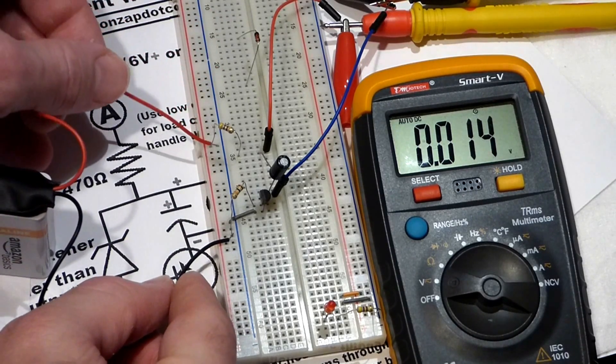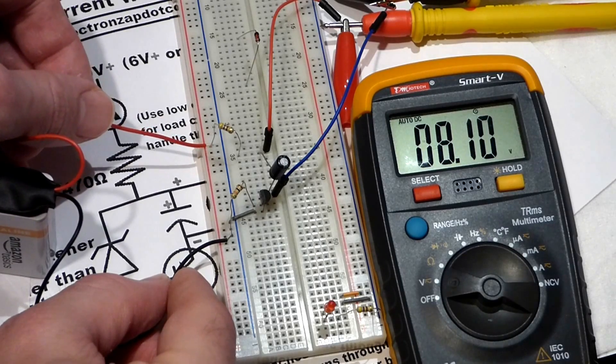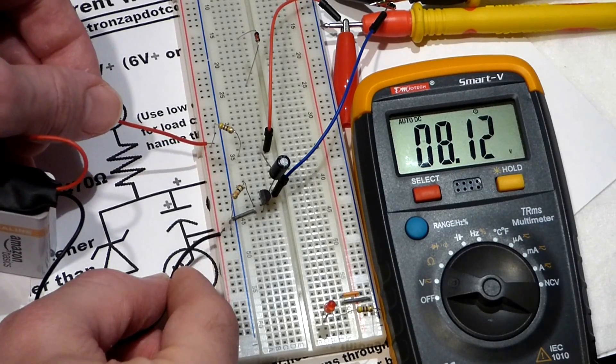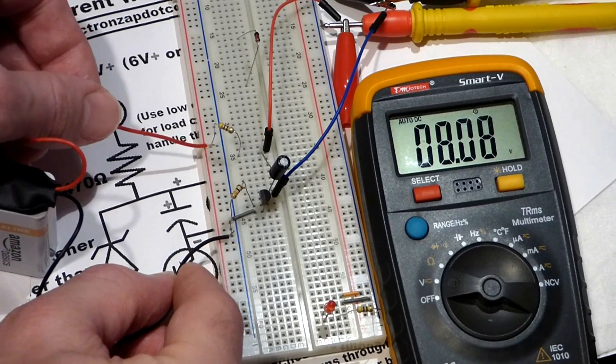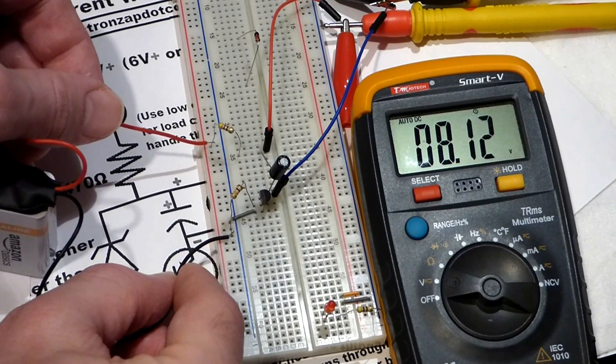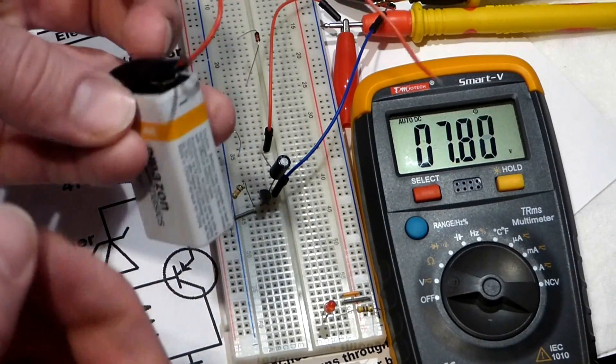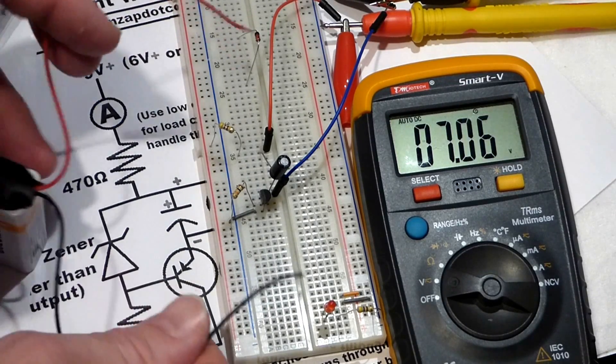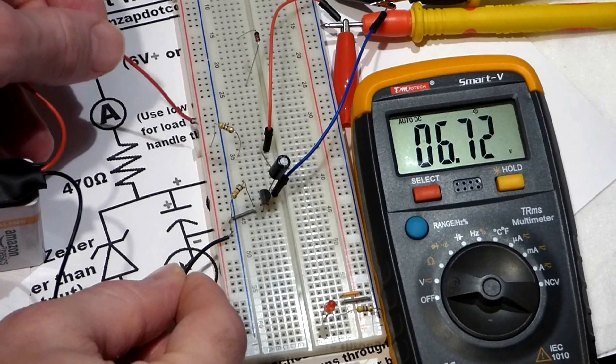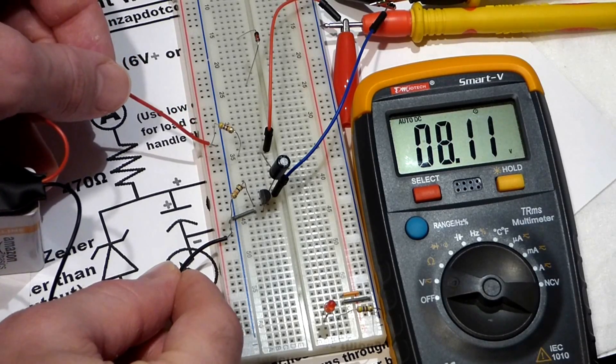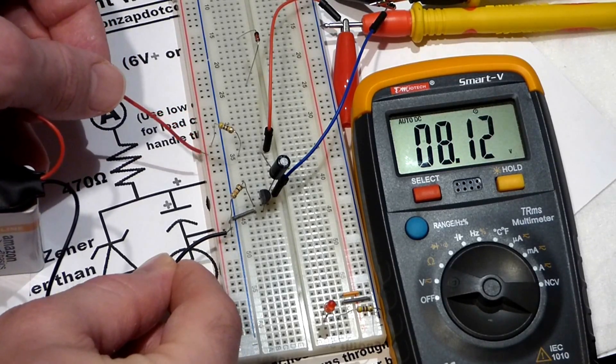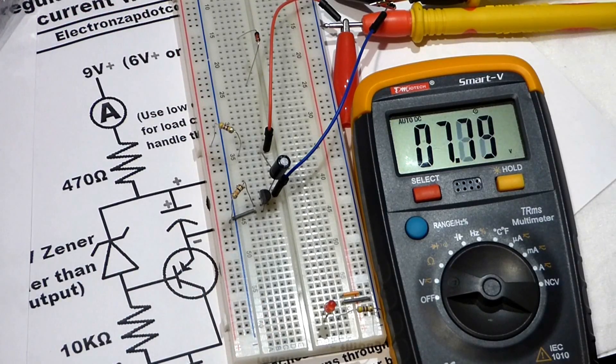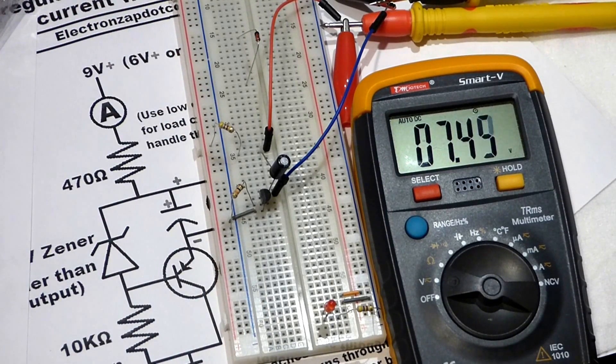The capacitor charges to almost eight volts pretty much instantly. This battery is eight and a half volts—it's a little older—so it charged the capacitor to almost the full battery voltage right away. We don't want that. We want the capacitor to stop charging at about five volts, so for that we'll add the zener diode next.